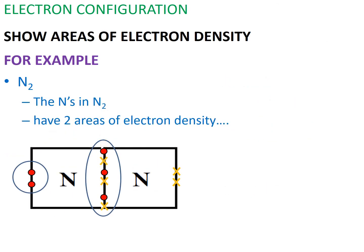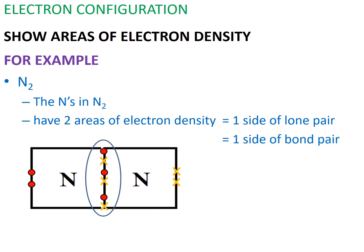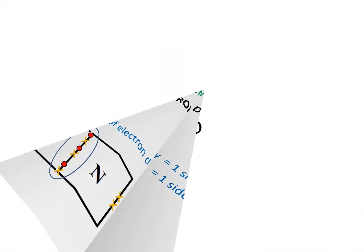Each of the nitrogen atoms in a nitrogen molecule have two areas of electron density: one area of lone pair and one area of bond pairs.